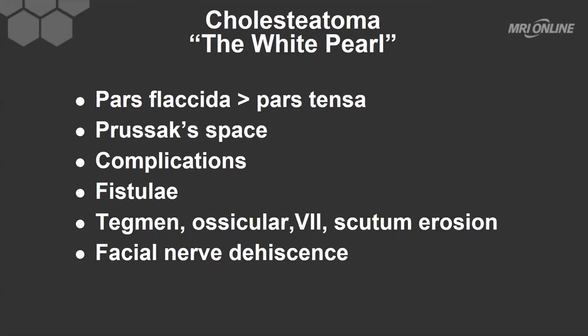Cholesteatomas will also erode bone. The most common sites of bony erosion are the tegmen tympani — that is the roof of the temporal bone — the ossicular chain, and typically we see the incus and malleus affected more commonly than the stapes. It can also affect the wall of the seventh cranial nerve, particularly along its tympanic portion, and it may erode the scutum.